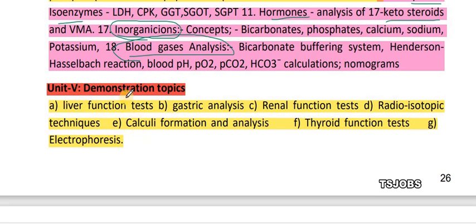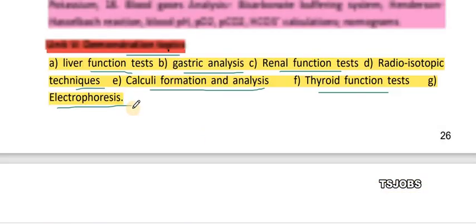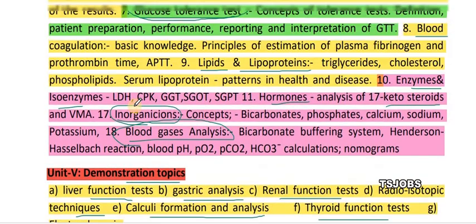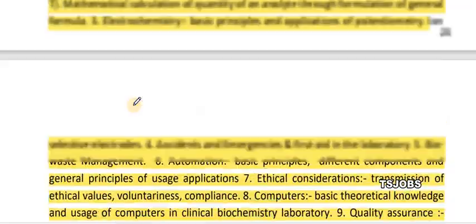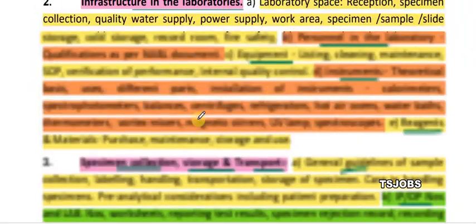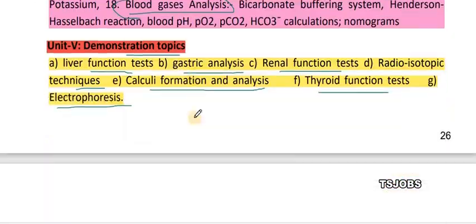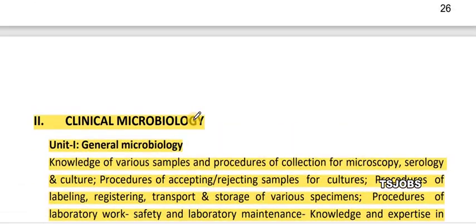Unit 5 is a demonstration topic covering liver function test, gastric analysis, renal function test, radioisotope technique, calculi formation and analysis, thyroid function test, and electrophoresis. This completes Unit 5 of clinical biochemistry.